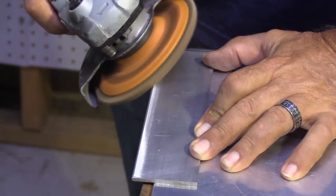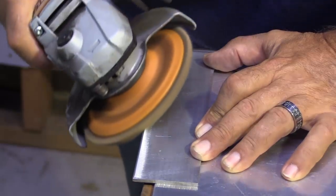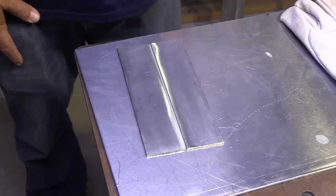Doing an eighth inch thick butt joint today and I'm knocking a little chamfer on it. Not a very big one, just a little one with this Walter flap disc. Then I'm going to wipe it with acetone before I weld it.